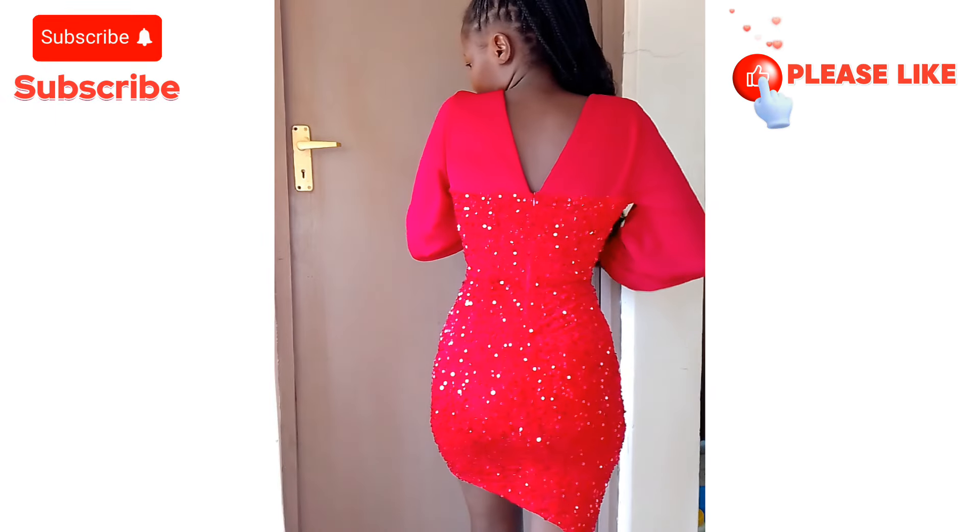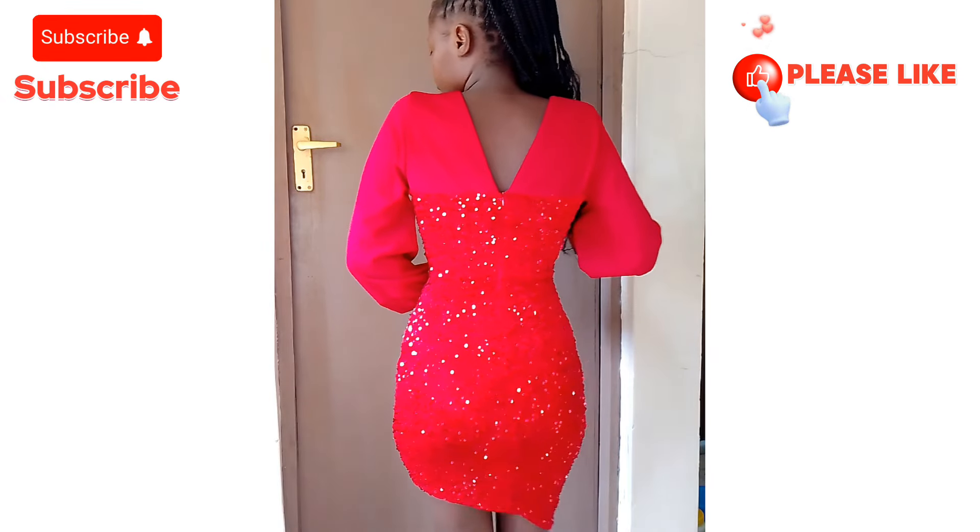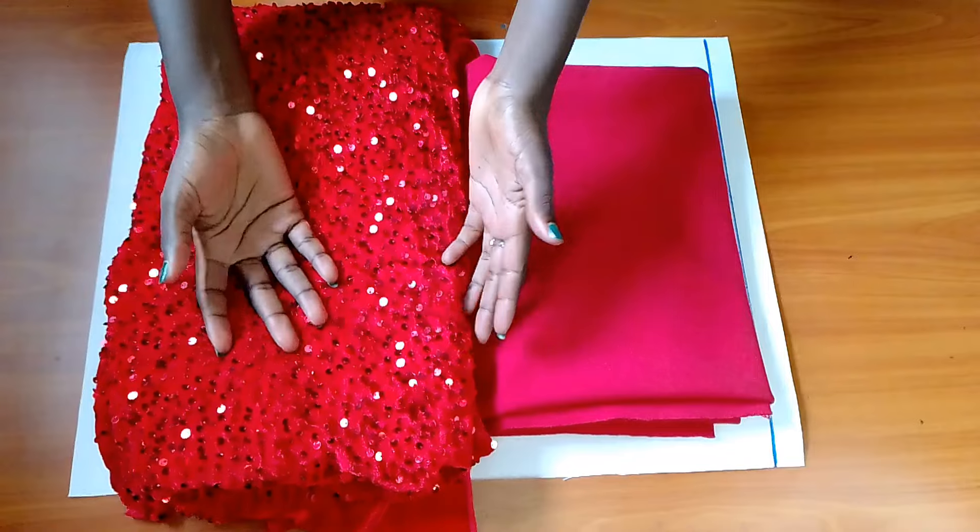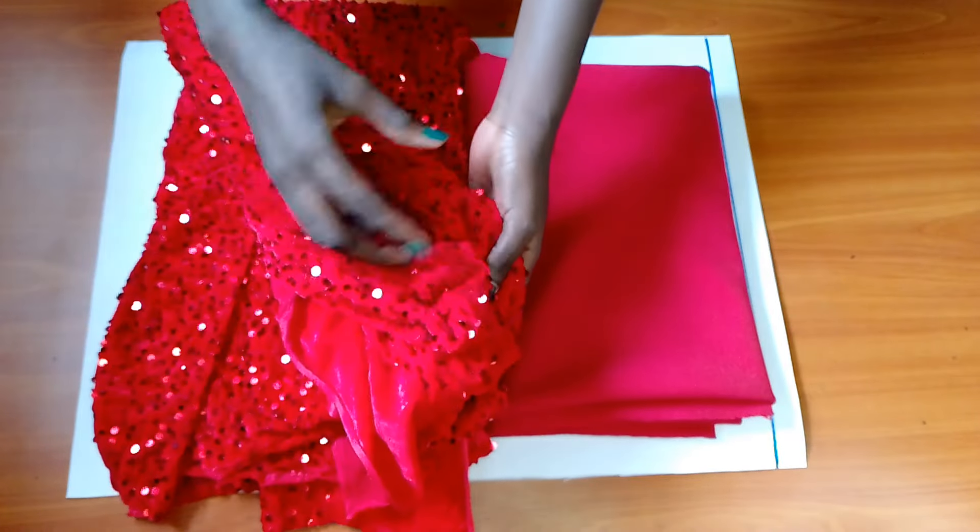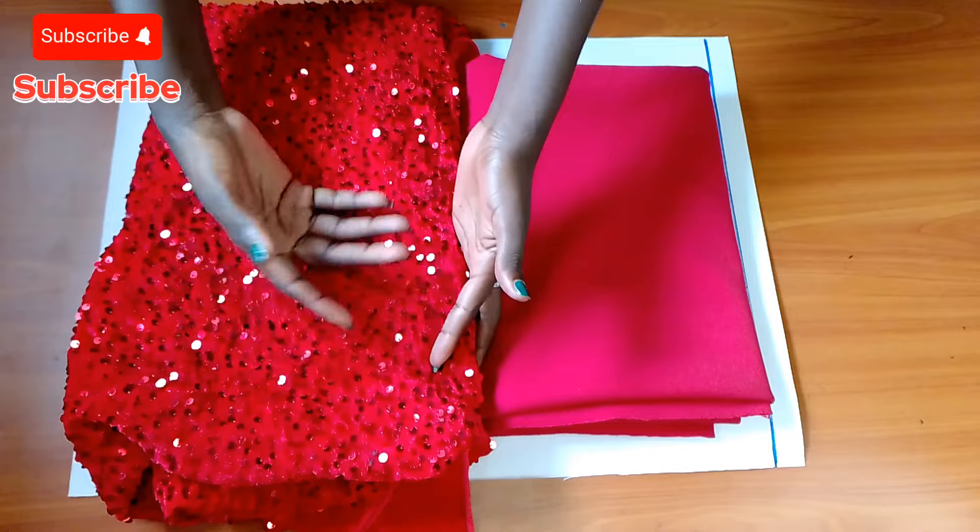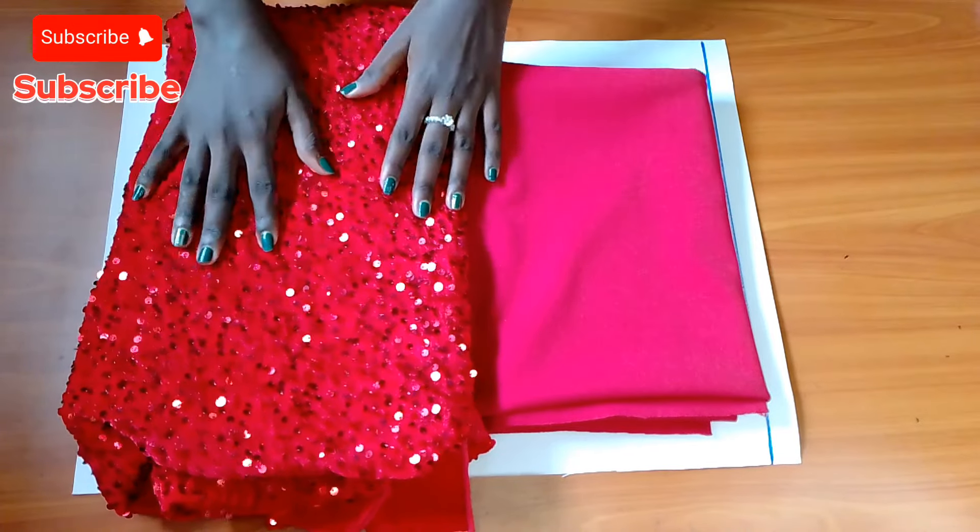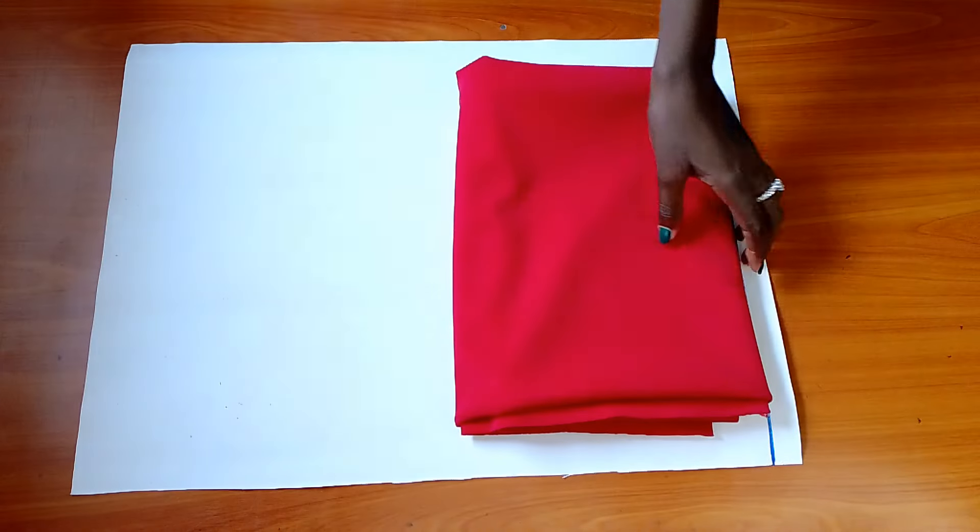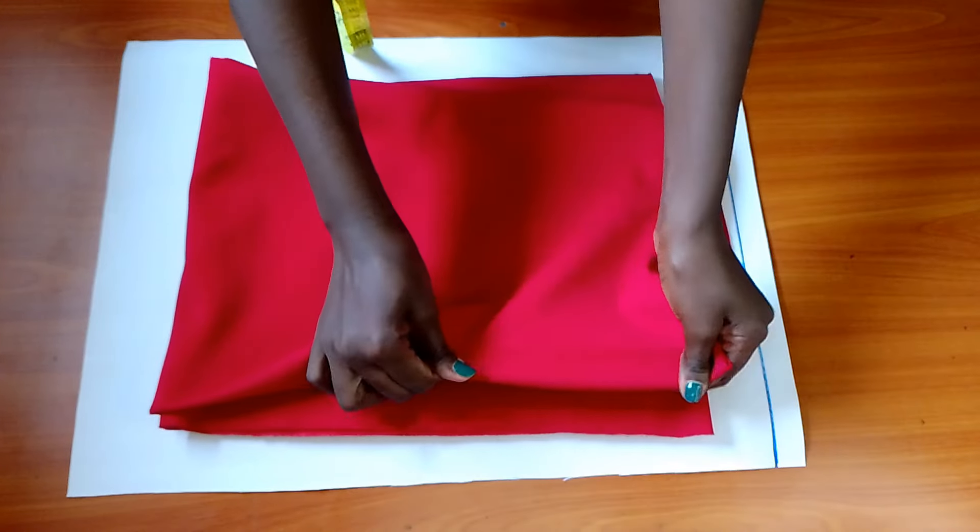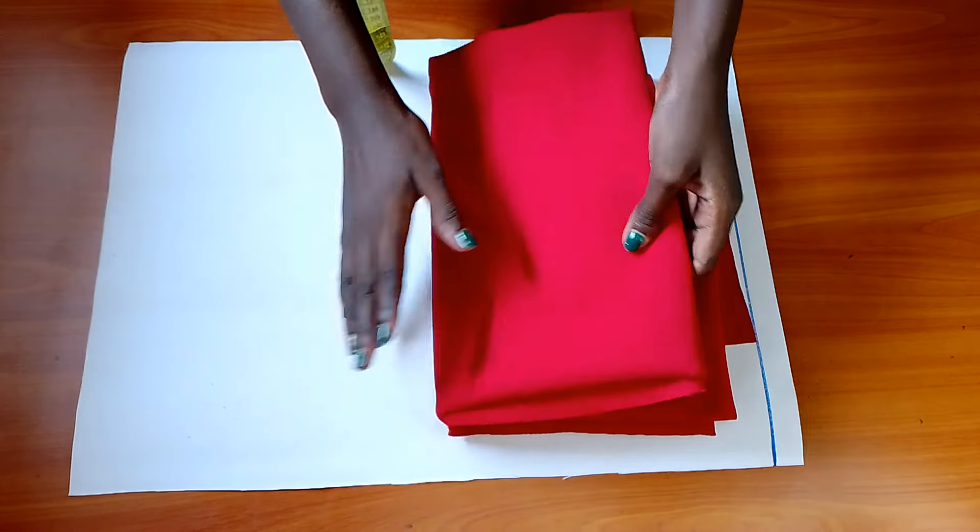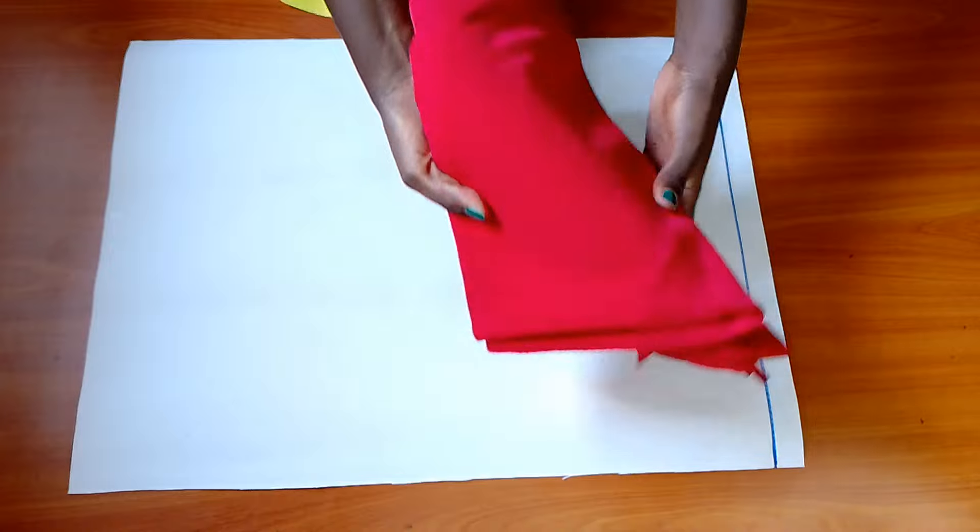For first time viewers, kindly consider subscribing for more content. To get started, we'll be using two types of fabric. First is a sequined stretchy fabric for the skirt and under bust area, about two meters. This is my first time using sequined fabric and I can't wait to see how it works out. Second is a lighter stretchy material for sleeves and yokes, about 1.5 meters. Chiffon fabric is another option you can consider.